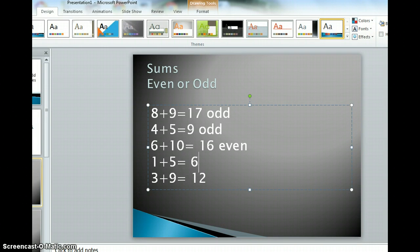If we do 5 plus 1, that's 6. Oh, 6 again! 2, 4, 6, counted by our 2s, we know that it is even. 3 plus 9 is 12. 2 is definitely an even number, so those are our even sums.